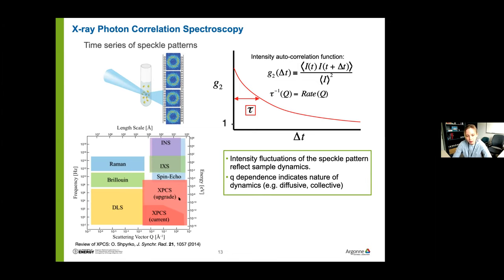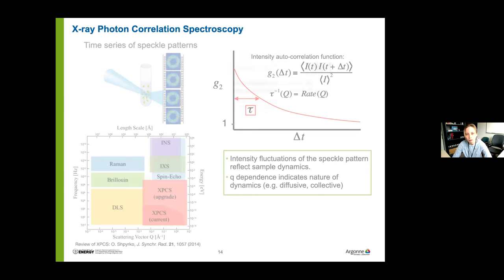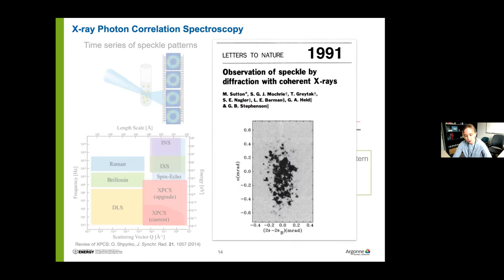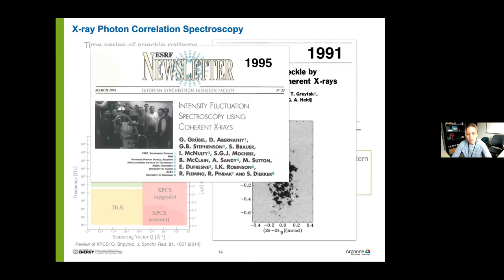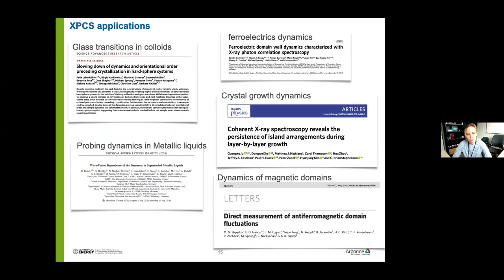We can construct a time correlation function, and the behavior of this function — usually called the G2 function — can describe the typical relaxation time in the system. The dependence on wave number tells us whether the dynamics is diffusive, collective, or Brownian. XPCS stands alongside other brilliant techniques and extends the dynamic light scattering method to much smaller scales. Currently, XPCS can probe down to the microsecond regime with coherent flux at the APS source.